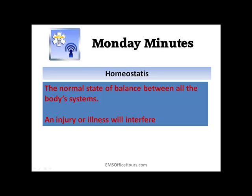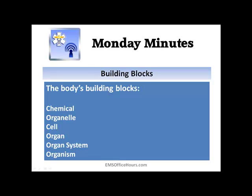These are key elements because this is the type of stuff you're going to see on a test — they might ask what is homeostasis, and this definition will be within the answer. Now, the body has building blocks, starting out with the chemical organelle, moving on to your cell, then the organ itself, the organ system, and then the entire organism. This is the type of stuff you might see on a test, and it's also important to help you build upon your patient assessment and clinical decision-making.